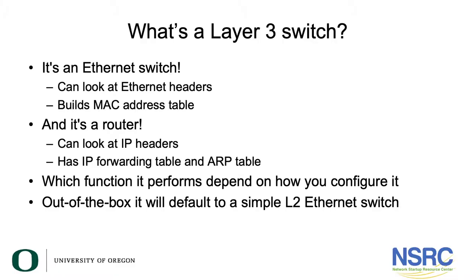In this session we're going to look at Layer 3 switches. A Layer 3 switch is an Ethernet switch — it can look at Ethernet headers and build MAC address tables — but it's also a router because it can look at IP headers. It has an IP forwarding table and an ARP table.